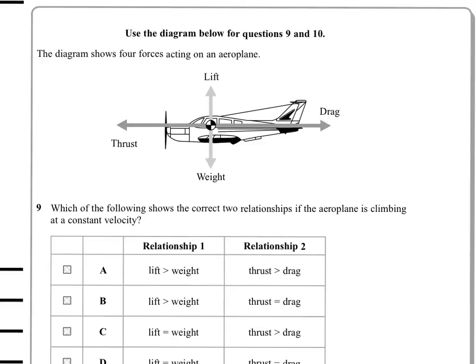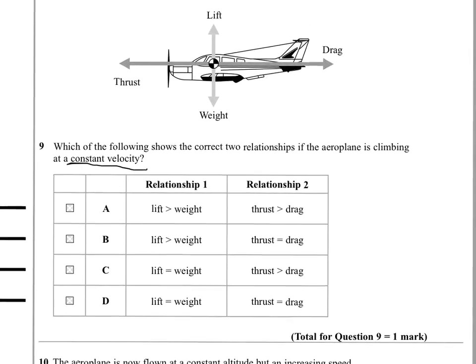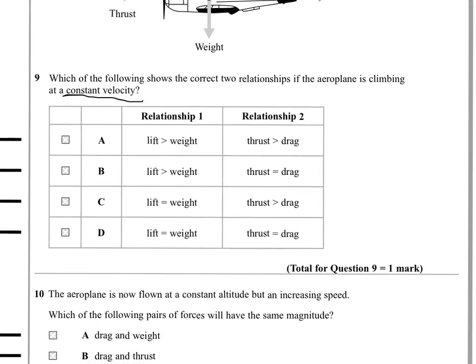Question nine gives us some names of forces acting on a plane and asks, which of the following shows the correct two relationships if the airplane is climbing at a constant velocity? Crucially, if it says constant velocity, we're talking about obeying Newton's first law, which says that if something has a constant velocity, the forces on it are balanced. We would expect the horizontal forces to be in balance and the vertical forces to be in balance. We're looking for a relationship where that's true. We've got lift and weight, and we've got thrust and drag. We're looking for them both to be equal. Nice and straightforward. It's D.